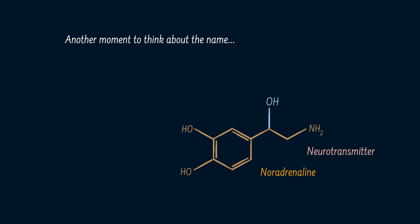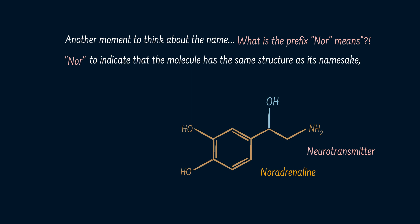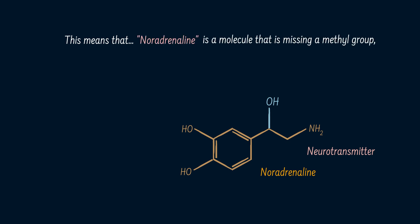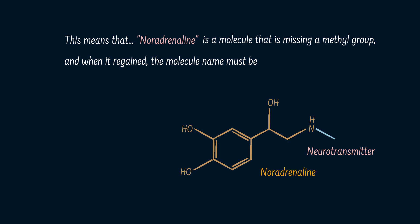Another moment to think about the name — what does the prefix 'nor' mean? 'Nor' is a term included in the name of a molecule to indicate that the molecule has the same structure as its namesake, but minus a group, most frequently a methyl group. This means that noradrenaline is a molecule that is missing a methyl group, and when it is regained, the molecule name must be adrenaline.